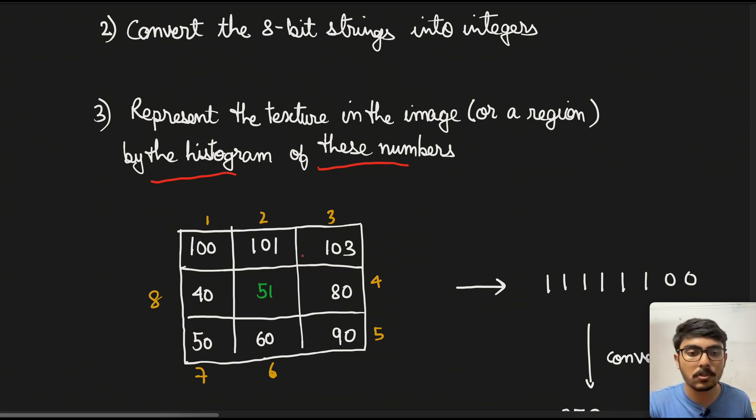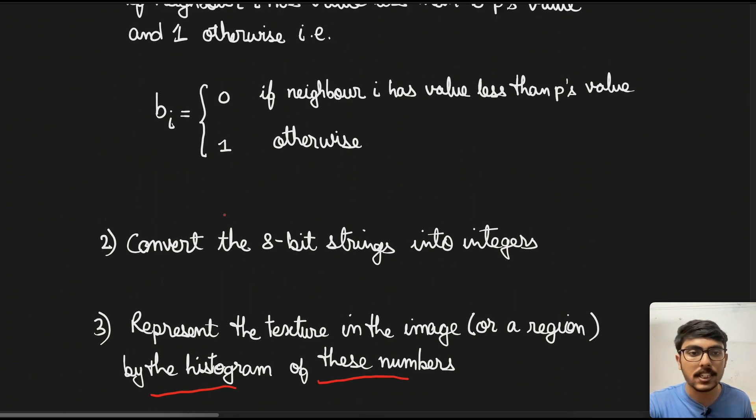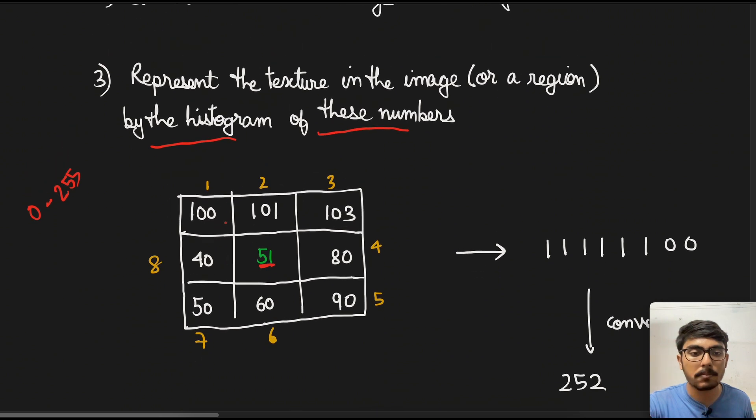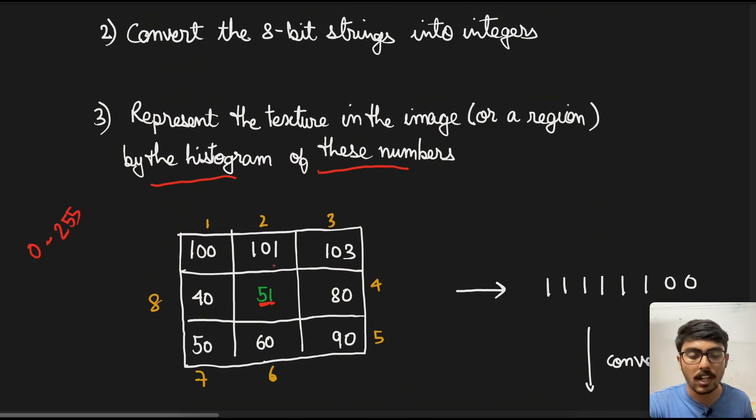Suppose this is an image kernel. This is not the image kernel that we are supposed to do in the question, but I have just taken it to illustrate the concept. Here you see the values are written, the values can be from 0 to 255. All these values are given and in the center we have 51.